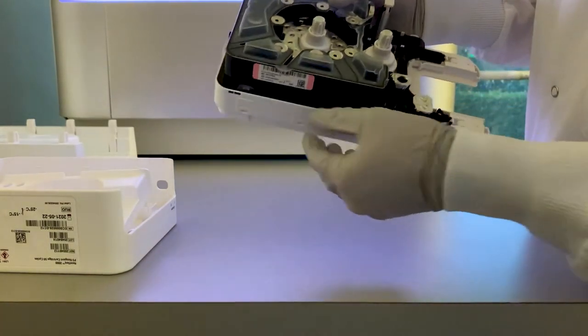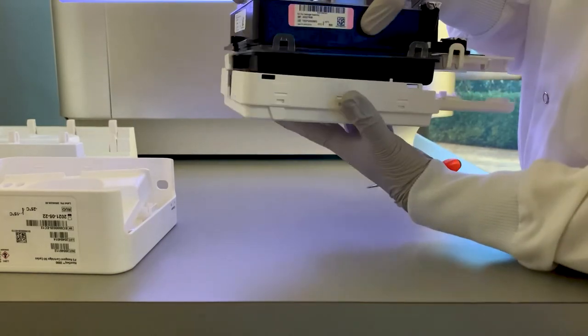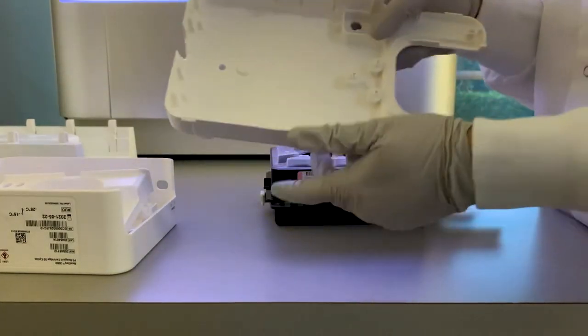To remove the reagent well plate from the lower assembly, disconnect one snap on one side of the lower assembly, and then remove the reagent well plate.